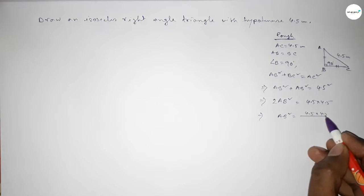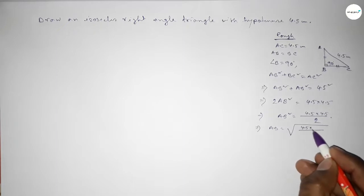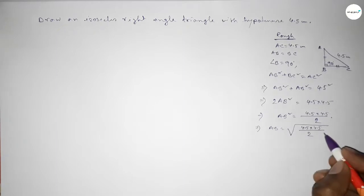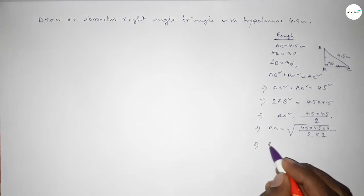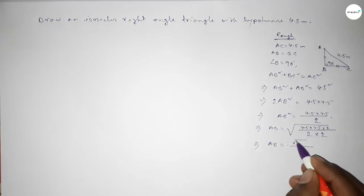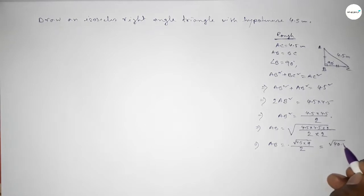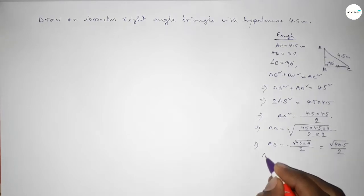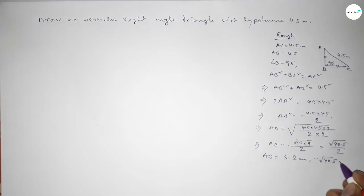This implies AB squared equals 4.5 times 4.5 over 2. Multiplying up and down by 2, AB equals the square root of 4.5 times 4.5 over 2, which gives 40.5 over 2. Therefore AB equals approximately 3.2 centimeters, since the square root of 40.5 is about 3.2.